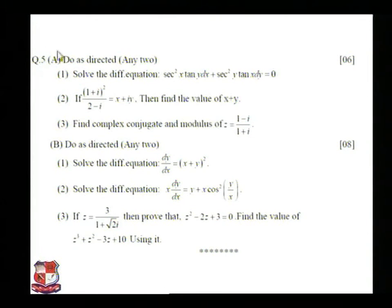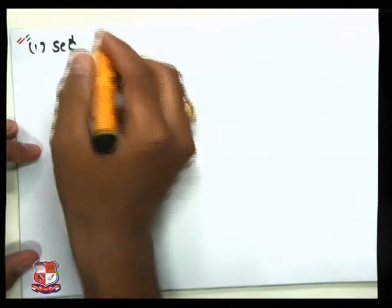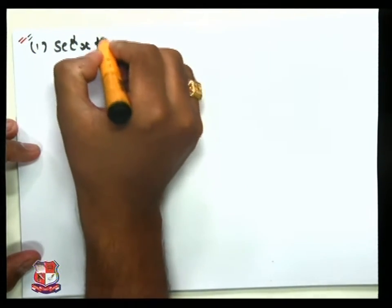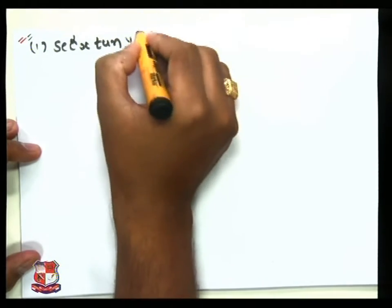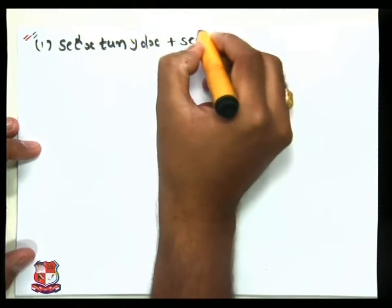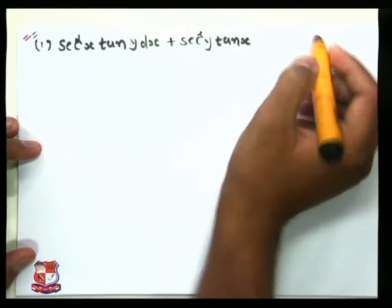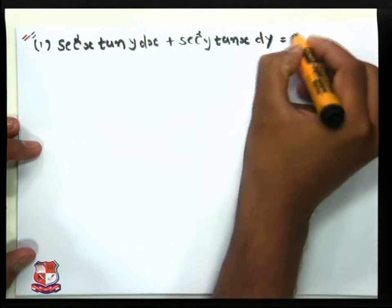The first part, question number 5a: solve the differential equation sec²x·tan(y) dx + sec²y·tan(x) dy = 0.